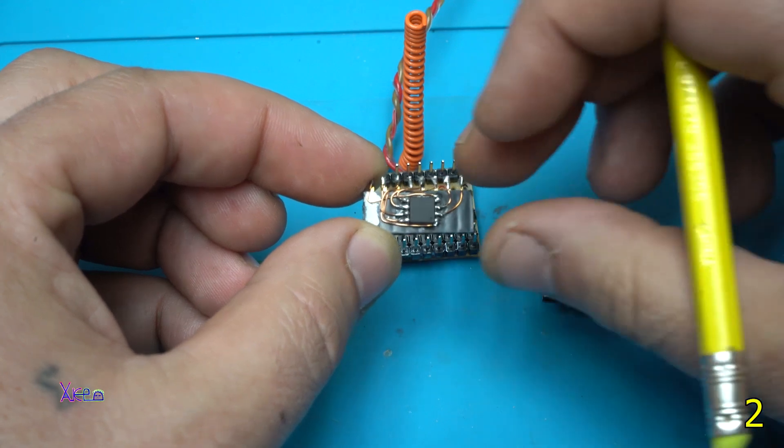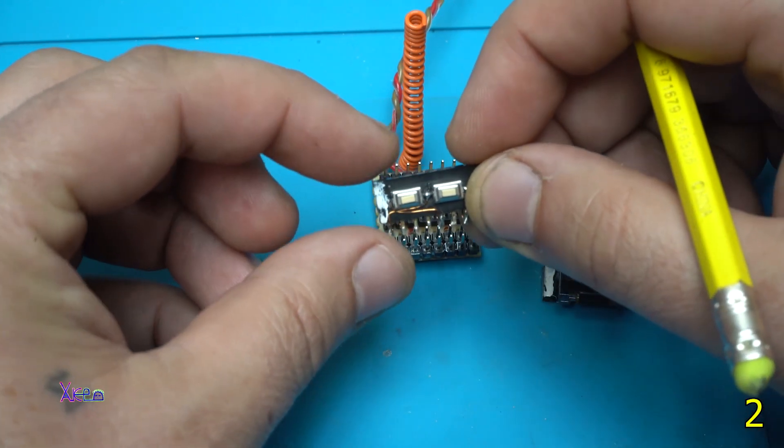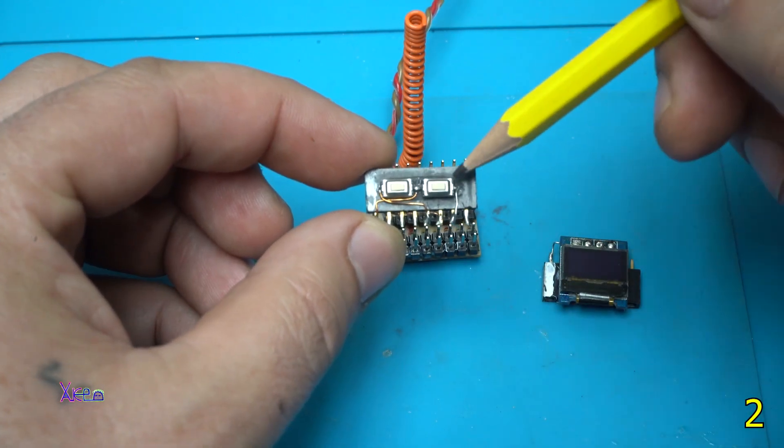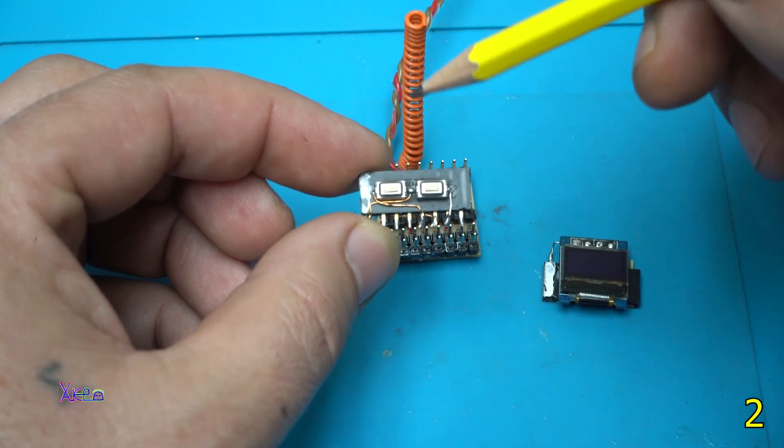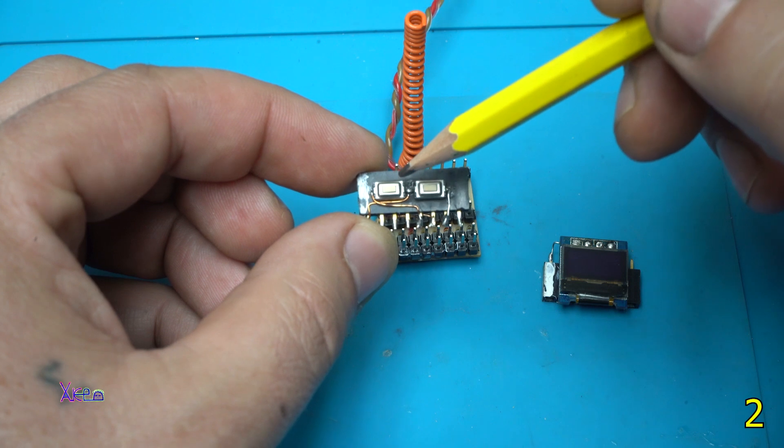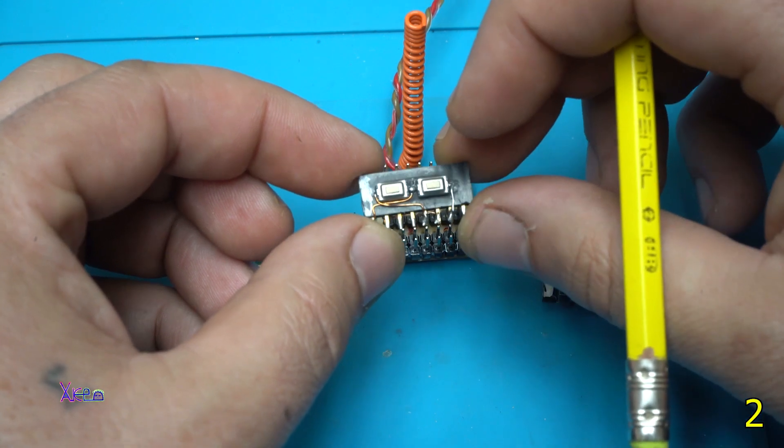This is the microchip ATtiny85 with solid copper wires soldered from the chip to the pin header. And behind I have two push buttons that are fixed on the header. This is for choosing the frequency forward and backward.